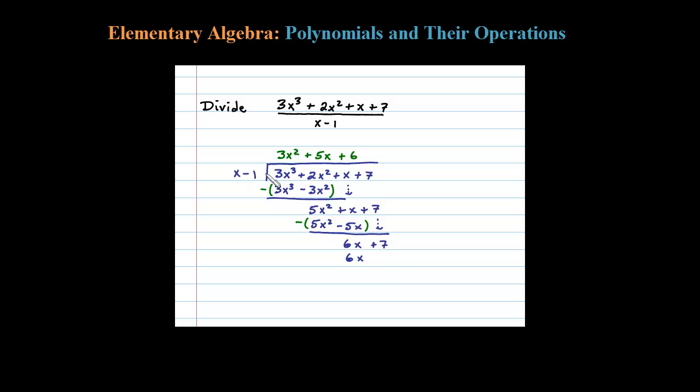Then 6 times negative 1 is minus 6, after which you then subtract. When I subtract here, 6x minus 6x is 0, and then distributing the negative, that's really going to be a plus, so 7 plus 6 is 13. So this is my remainder.